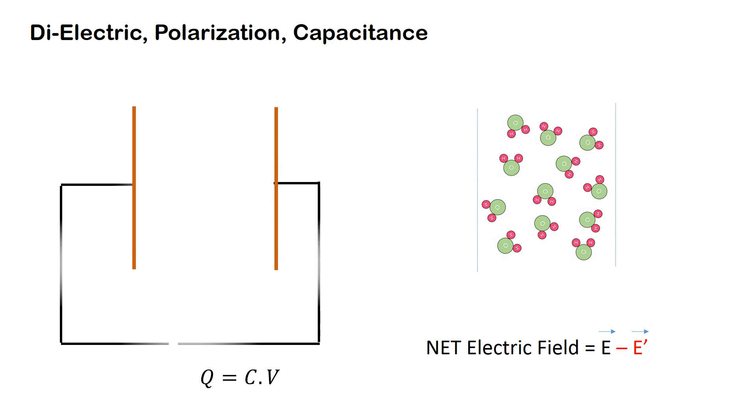When a battery is connected to the capacitor, charges accrue on the plates of the capacitor, and this causes an electric field between the plates of the capacitor.